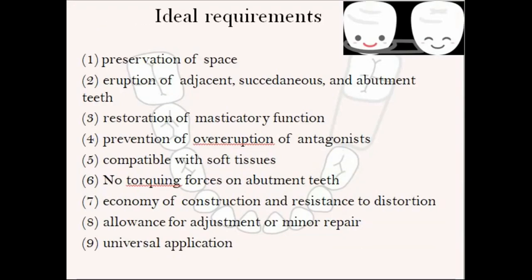There are some ideal requirements for space maintainers. It should aid in the preservation of space, help in the eruption of adjacent or succedaneous and permanent teeth, and not impede or restrict any of these. It should restore masticatory function, prevent supra-eruption of antagonist teeth, be compatible with soft tissue without causing irritation, and have no abnormal forces on the permanent teeth. It should be economical, resistant to distortion, allow for adjustment and minor repair, and be of universal application.